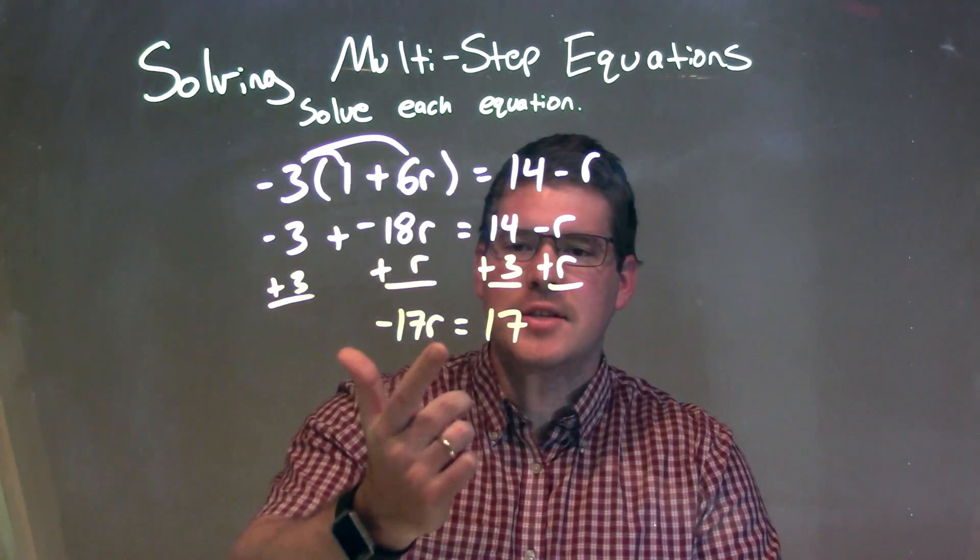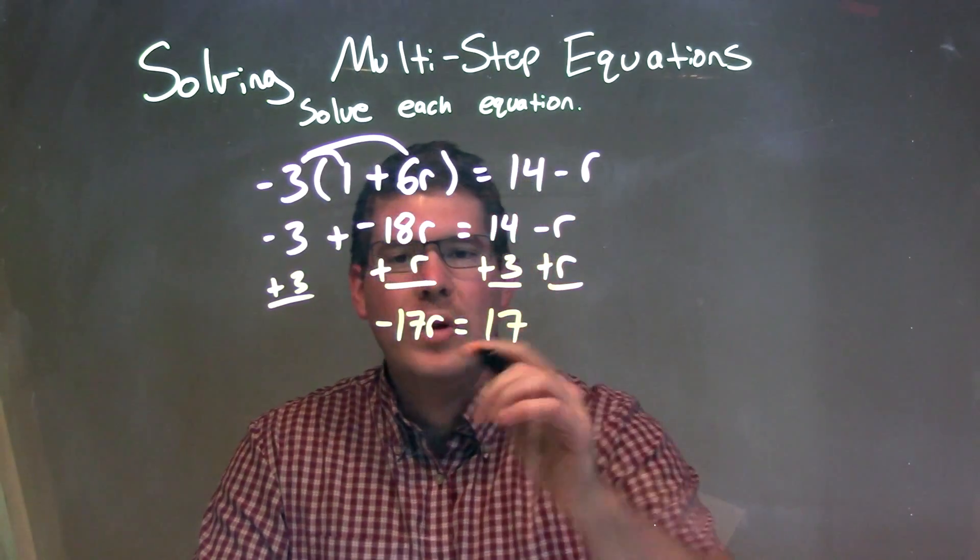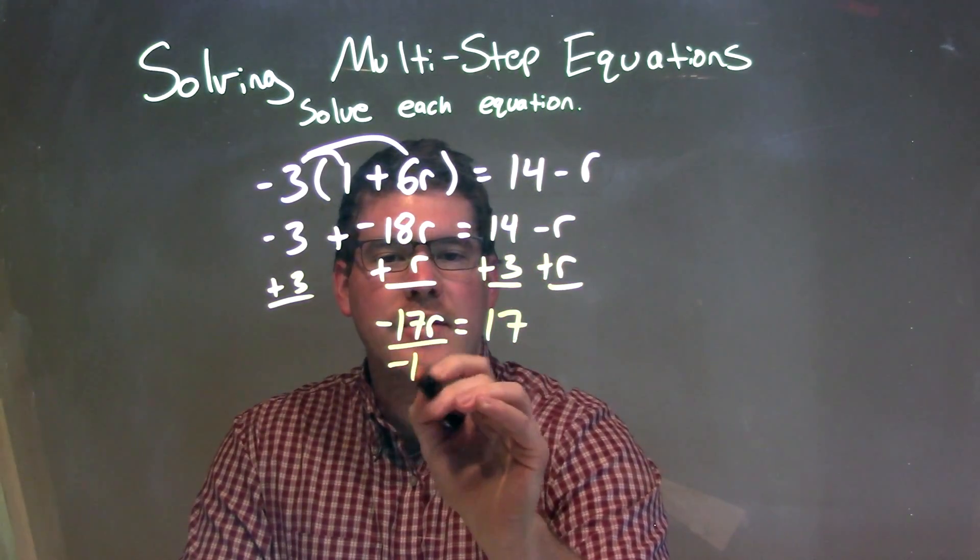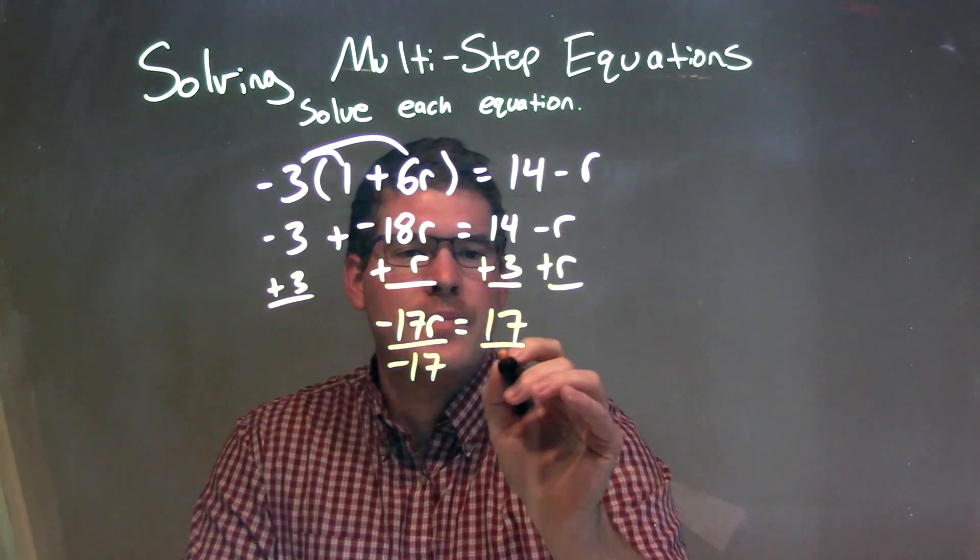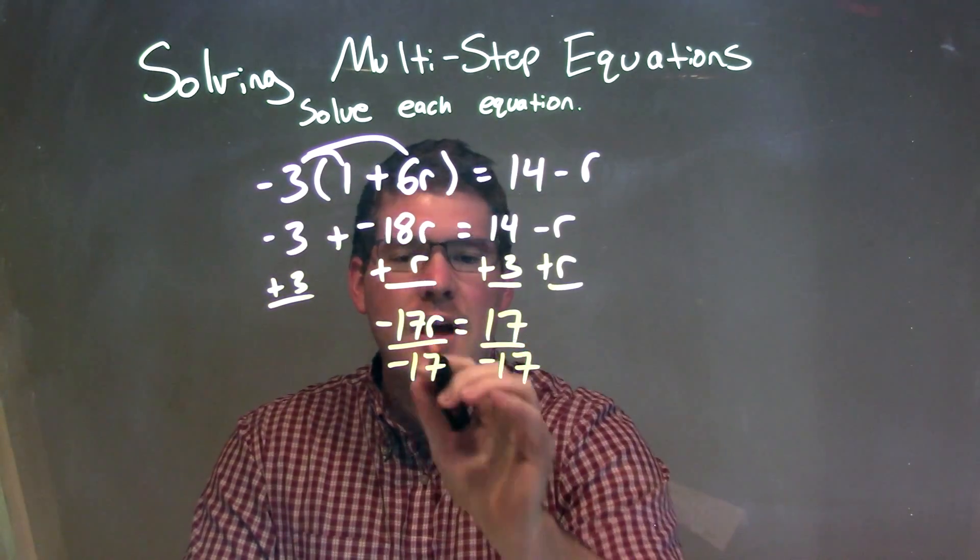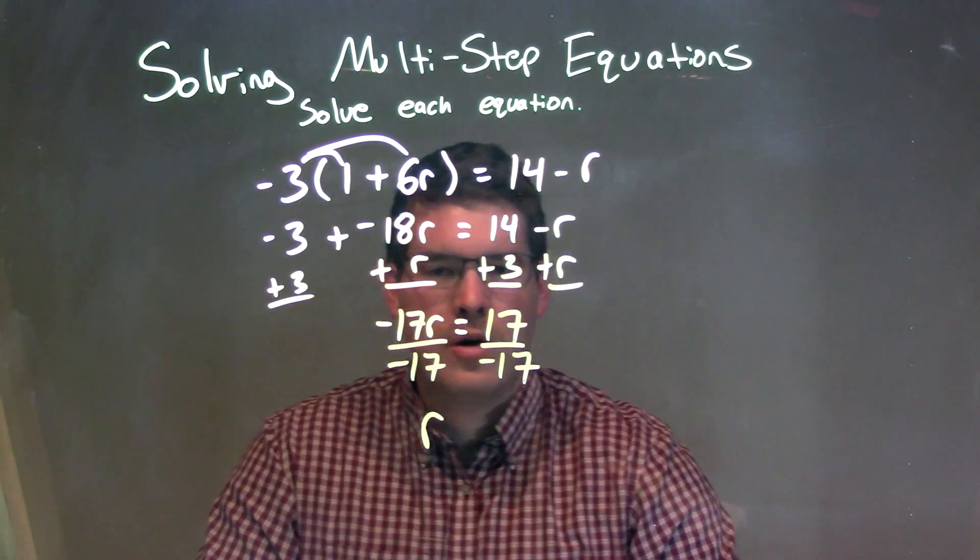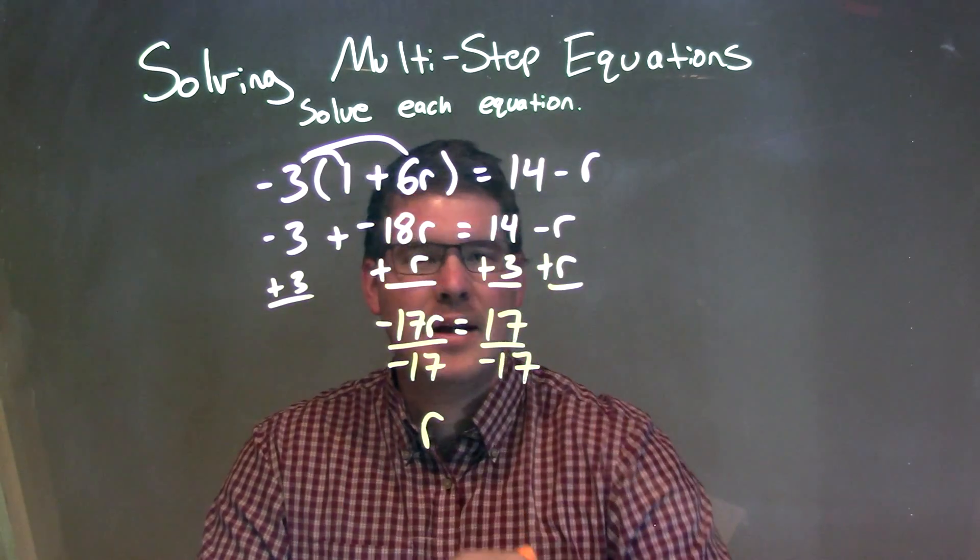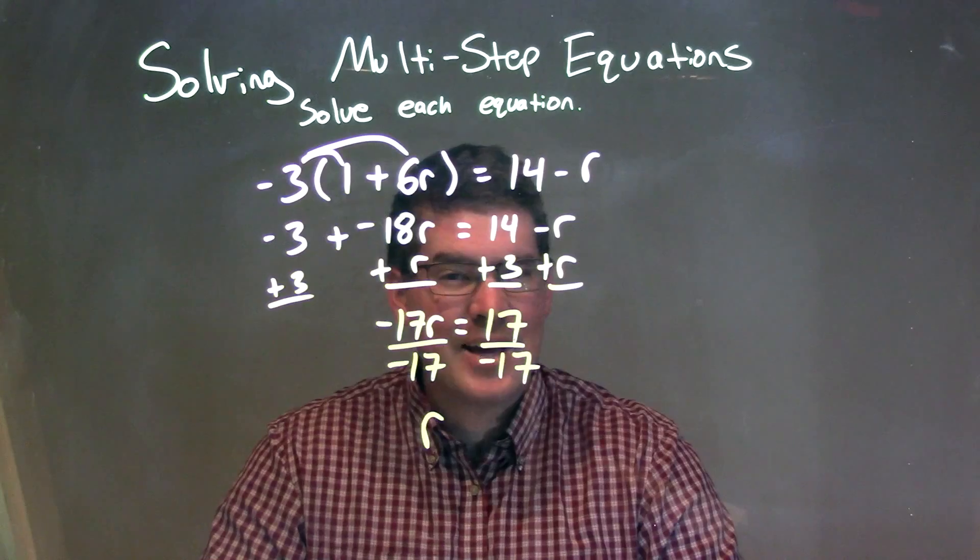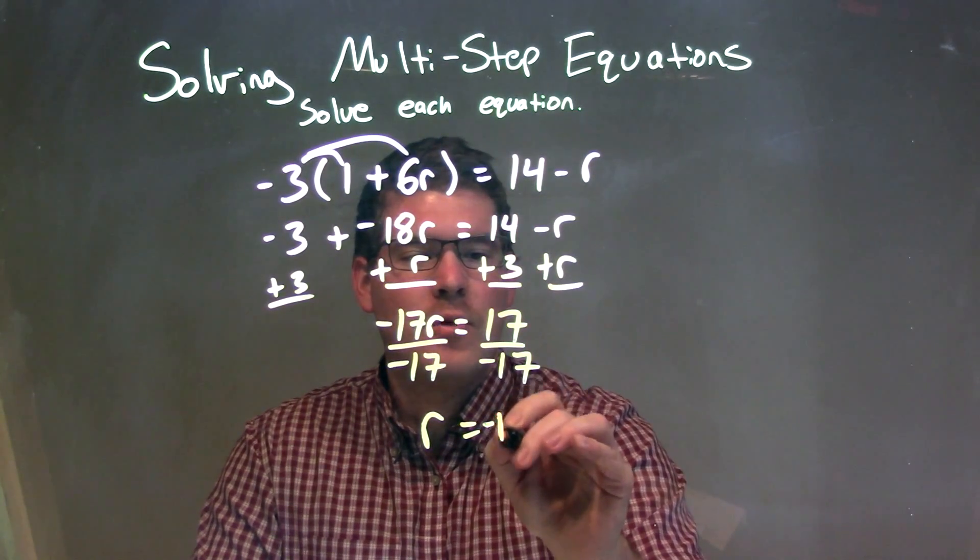So now we have a negative 17r equals 17. We need to divide by a negative 17 to both sides. That's opposite of the multiplication going on there. Divide by a negative 17. This leaves us with a positive r on the left, and 17 divided by a negative 17 is a negative 1, and that's going to be on the right, negative 1.